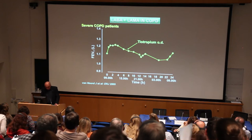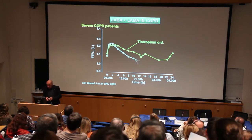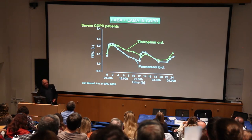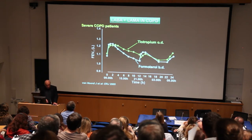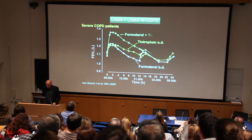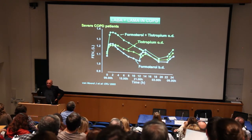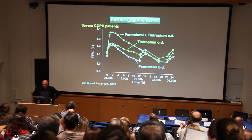Tiotropium is once a day, and here's formoterol twice a day — you can see how formoterol wears off before the next dose. But in this study they combine these drugs, and you can see an additive effect. This could be because tiotropium is not at the top of its dose-response curve and you're giving another bronchodilator, so you see this add-on effect.